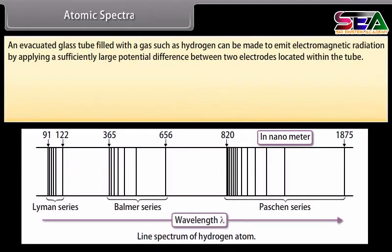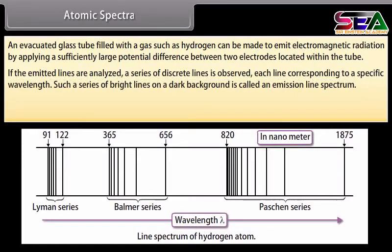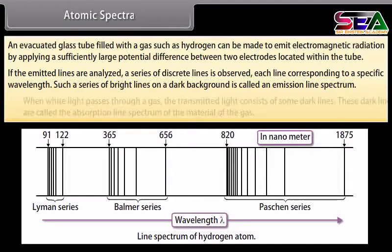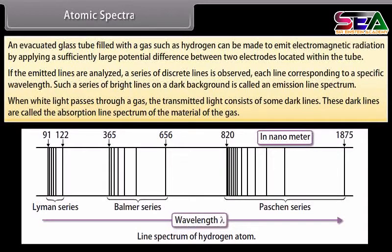Atomic spectra: An evacuated glass tube filled with a gas such as hydrogen can emit electromagnetic radiation by applying a sufficiently large potential difference between two electrodes within the tube. If the emitted light is analyzed, a series of discrete lines is observed, each corresponding to a specific wavelength. Such a series of bright lines on a dark background is called an emission line spectrum. When white light passes through a gas, the transmitted light shows dark lines called the absorption line spectrum.